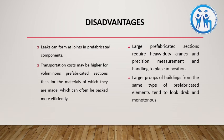Large prefabricated sections require heavy-duty cranes to hoist them into placing position. Additionally, large groups of buildings made from the same type of prefabricated elements tend to look monotonous. All units cast to the same type means you cannot easily vary the design with prefabricated construction.